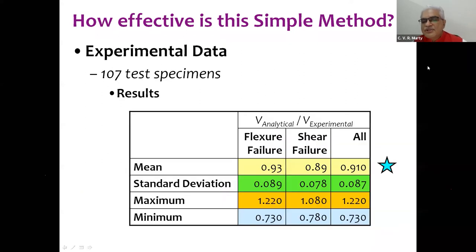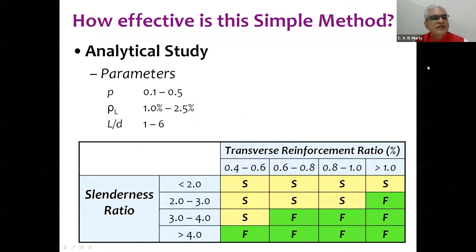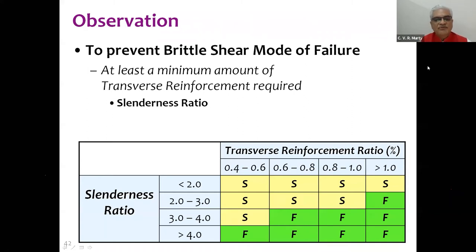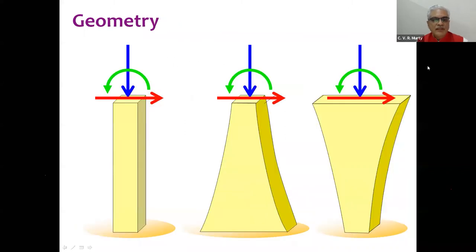The method should be simple with errors within acceptable engineering limits — 8–10% is acceptable. An analytical study showed that for axial load ratios up to 50% of ultimate and normal ranges of longitudinal steel percentage and L/d in bridge piers, a minimum amount of transverse reinforcement is required to prevent brittle shear failures, depending on the slenderness ratio. This is crucial guidance: lower slenderness ratios need higher transverse reinforcement percentages to ensure flexure failure governs.